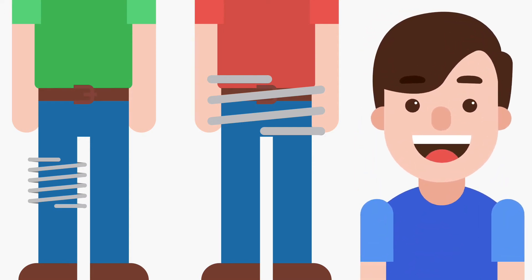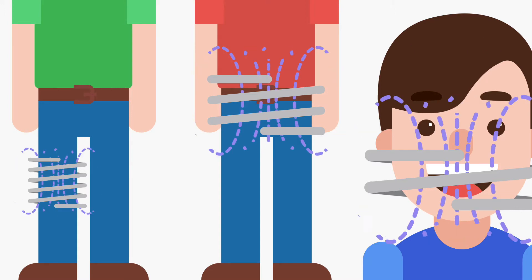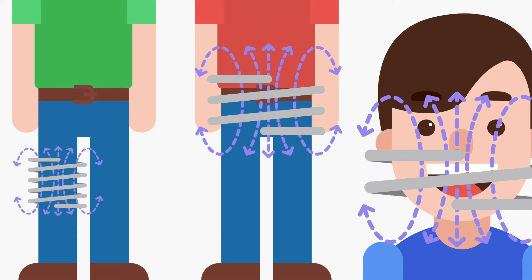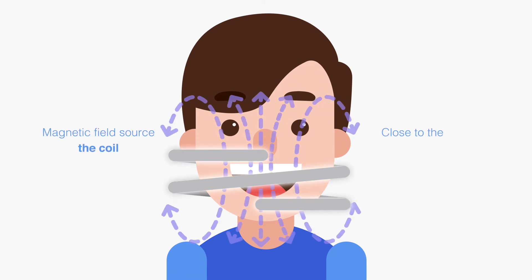In the case of the mouth with a dental implant, you could potentially put a coil around the teeth from outside of the jaw. So magnetic fields, one of their beauty is it passes right through us. We really don't impede a magnetic field. So as long as you can get the magnetic field source, this coil close to the object, it will interact.